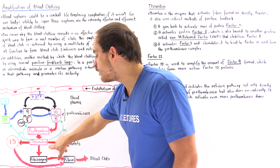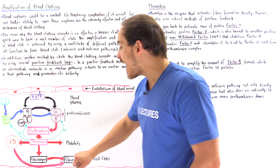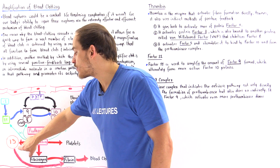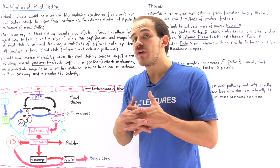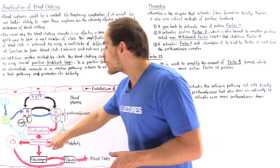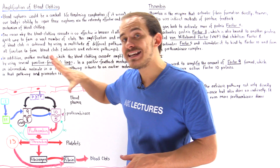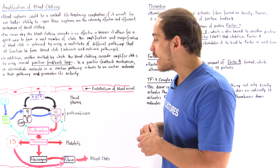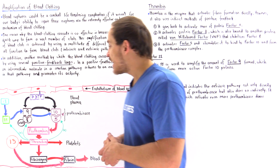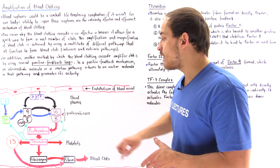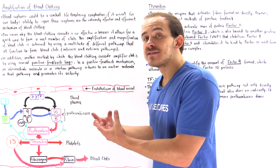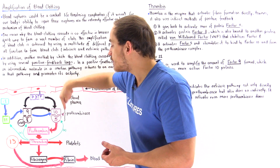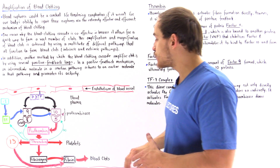Notice that when we actually form thrombin, thrombin not only activates fibrinogen into fibrin and calls upon platelets and aggregates factor 13 — which is needed to form the covalent bonds between fibrin molecules — but thrombin actually goes back to the beginning of this entire pathway and activates three different types of factors. It activates factor 11, it activates factor 8, and it activates factor 5, and this process amplifies and produces even more of these dimer complexes needed to produce blood clots.